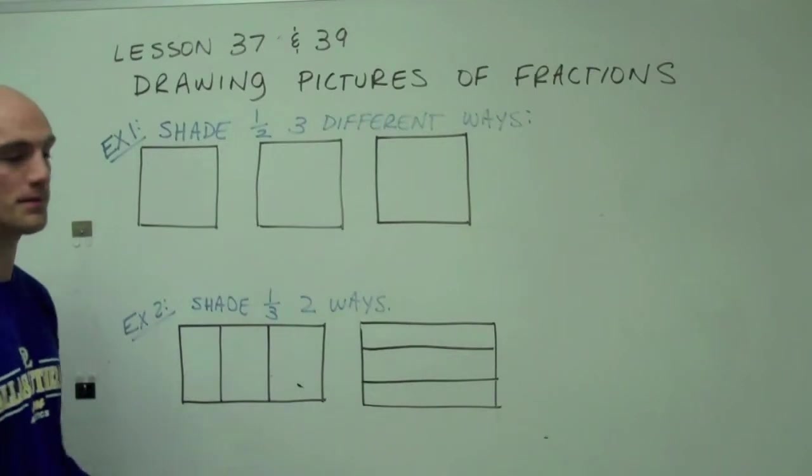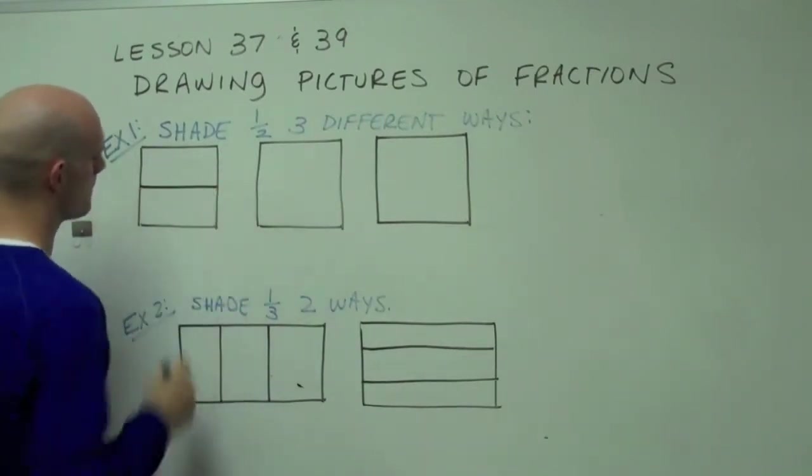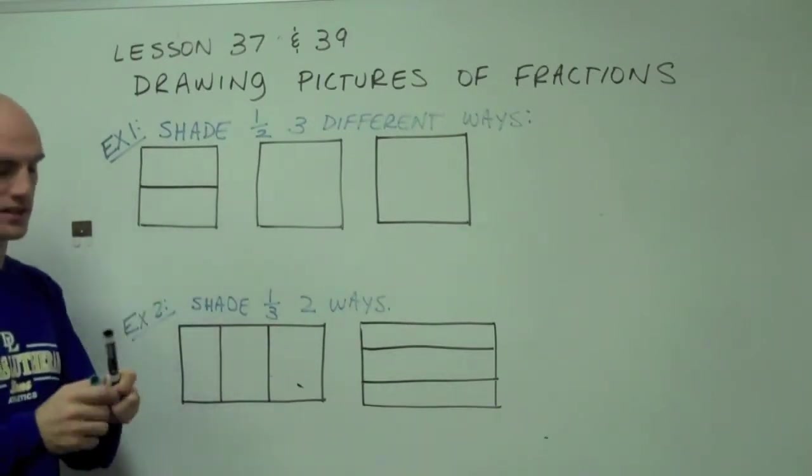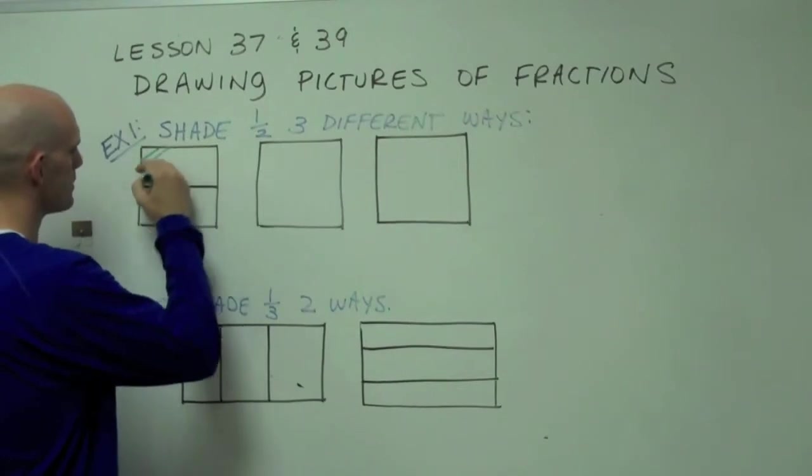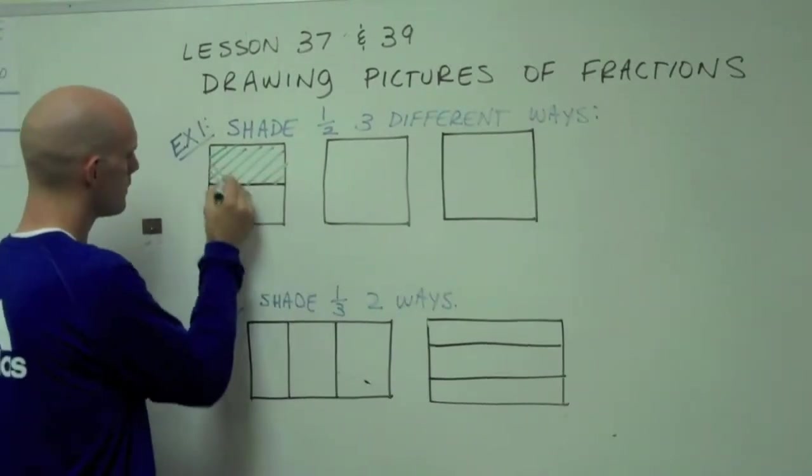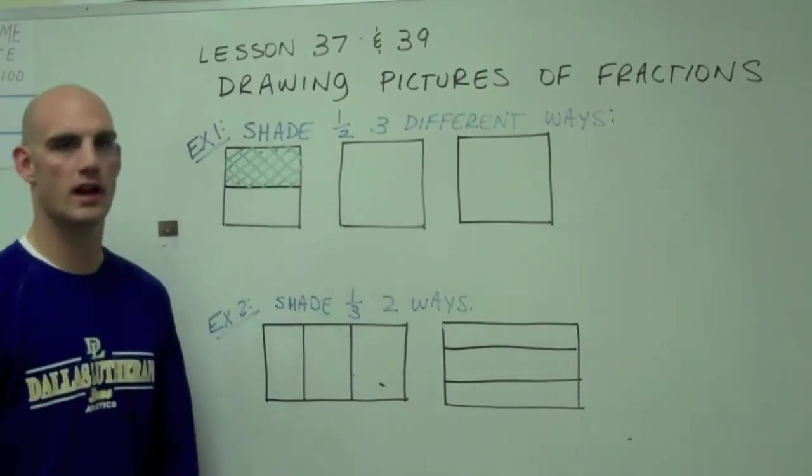One of the ways we can do it is we can divide it horizontally, right along the horizon. So if I was going to shade one half of this, I would shade one of these two pieces. So I've shaded one half.